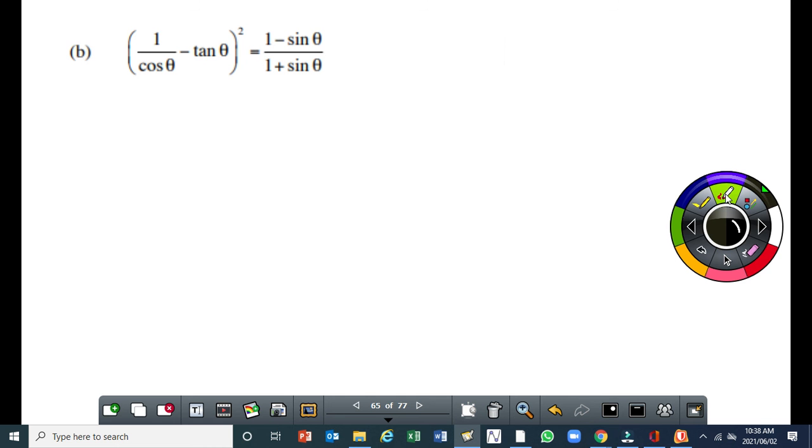Alright, so first thing, left hand side is equal to 1 over cos θ. So 1 over cos θ minus tan θ, and all this is squared.